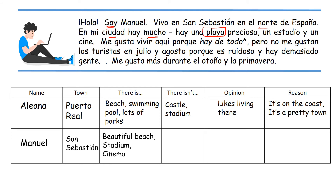Me gusta vivir aquí — I like to live here — porque hay de todo, which means there is everything. So nothing goes in the 'what isn't there' box. But: no me gustan los turistas en julio y agosto — he doesn't like the tourists in July and August — porque es ruidoso, it's noisy, y hay demasiada gente — there are too many people.